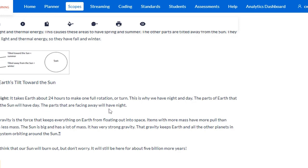Gravity. Gravity is the force that keeps everything on Earth from floating out into space. Items with more mass have more pull than those with less mass. The sun is big and has a lot of mass. It has a very strong gravity that keeps Earth and all the other planets in our solar system orbiting around the sun. Scientists think that our sun will burn out, but don't worry, it'll still be here for about 5 billion more years.